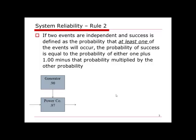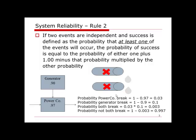I call it a parallel structure because it looks like I have two pipes delivering water to my destination parallelly and independently. So if either one of these two pipes breaks, it doesn't matter — I still have the other one working. I will only be unable to get the water I need when both of them break. So the system reliability will only be one minus the probability that both components fail.